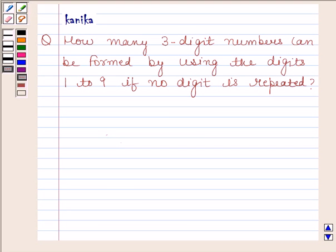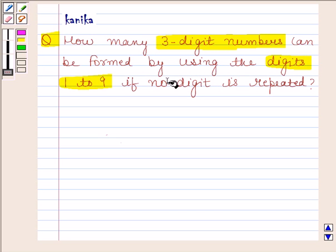Hi and welcome to your session. Let us discuss the following question. The question says, how many three-digit numbers can be formed by using the digits 1 to 9 if no digit is repeated?